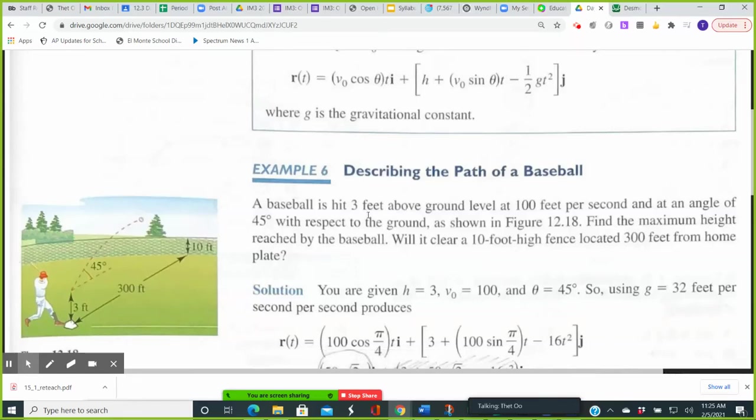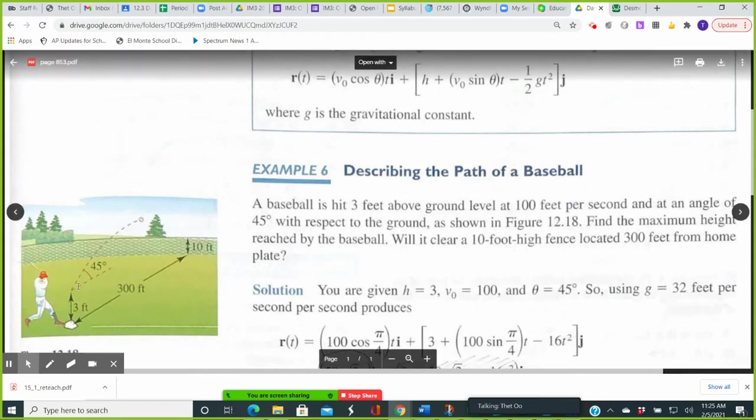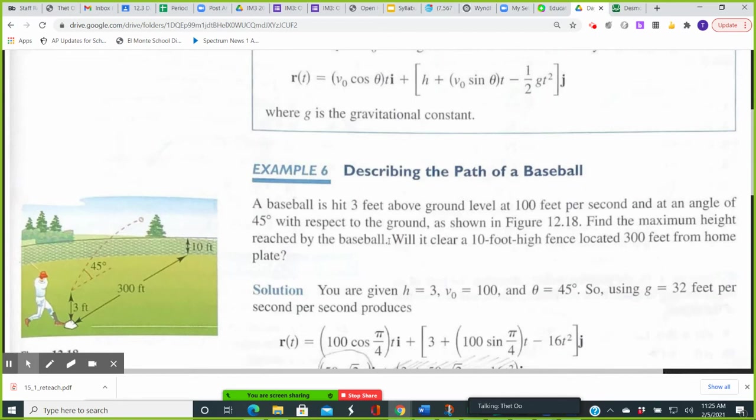We're taking a look at example six. A baseball is hit three feet above ground level at 100 feet per second and at an angle of 45 degrees with respect to the ground as you can see in the figure. Find the maximum height reached by the baseball. Will it clear a 10-foot high fence located 300 feet from home plate?